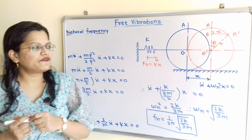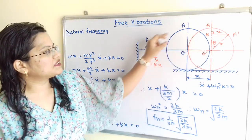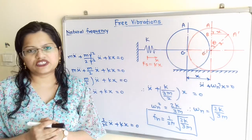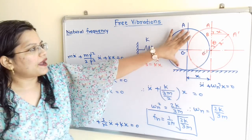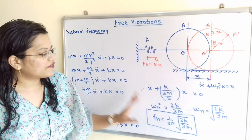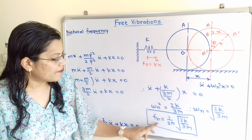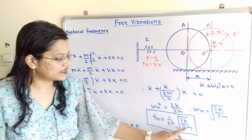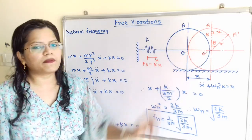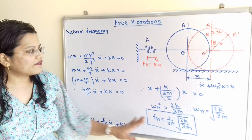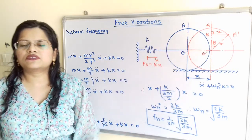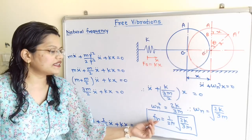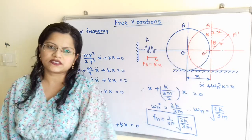Now, if the diameter of the disk is reduced by 50%, what is the effect on the natural frequency? Observing the formula for Fn, it is expressed only in terms of K (stiffness) and M (mass of the disk). Therefore, if the diameter is reduced by 50%, there is no effect on the natural frequency of the system.